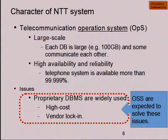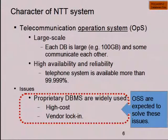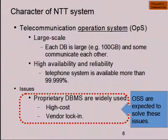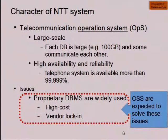I'll summarize NTT system characteristics because they have influence on PostgreSQL operation. Our main production systems are telecommunication operation systems, which we call OPS for short. OPS characteristics include relatively large database size and requirements for high availability and reliability, because the telecommunication system itself is reliable at 99.999% or more, so the operation system should be equally reliable.